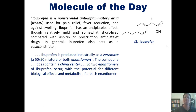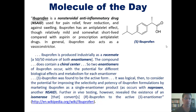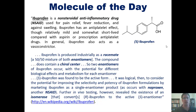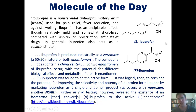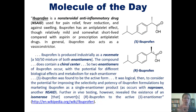So two enantiomers of ibuprofen occur with the potential for different biological effects and metabolism for each enantiomer. S-ibuprofen was found to be the active form. It was logical then to consider improving the selectivity and potency of ibuprofen formulations by marketing it as a single enantiomer product, as occurs in naproxen, which is another NSAID. Further in vivo testing, however, revealed the existence of an isomerase — an enzyme inside our bodies that converts R-ibuprofen to S-ibuprofen, the active enantiomer. So you can take this molecule as a 50-50 mixture, and our bodies possess an enzyme that converts the inactive R-form into the active S-form. Unlike thalidomide, the inactive form will not harm us. Isn't that cool?